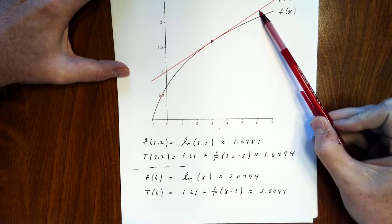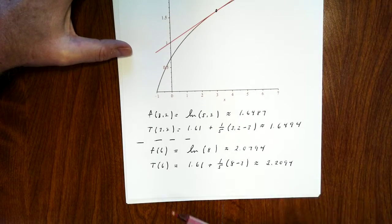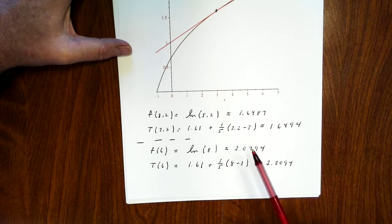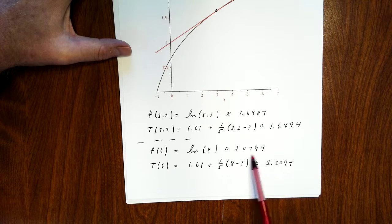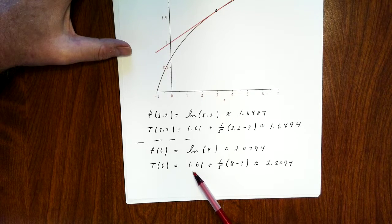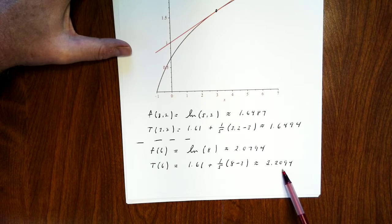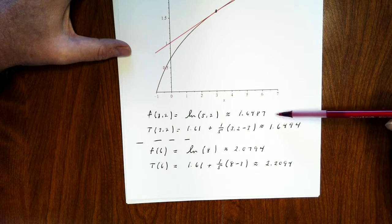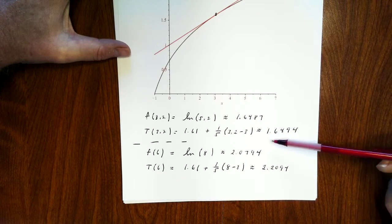If I go way out to x equals 6, there's a noticeable difference between the tangent line and the function. f(6) equals ln(8), which is approximately 2.0794. If I plug 6 into the tangent line, I get 1.61 plus 1/5 times (6 minus 3), which works out to about 2.2094. So if an input is close to 3, the tangent line does a much better job approximating the function; but if we plug in a point far away from 3, we don't get a very good approximation.